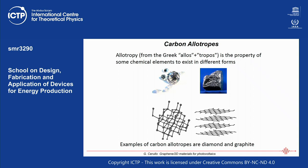In diamond, the carbon atoms are linked to each other by sp3 bonds — you have tightly bound atoms and an insulator. In graphite, the atoms are linked together forming a planar network, and then you have several planes held together by non-covalent van der Waals bonds.